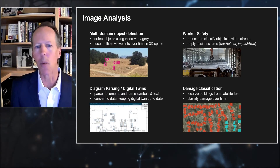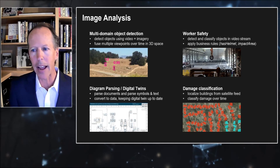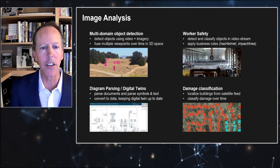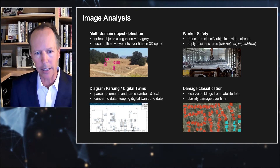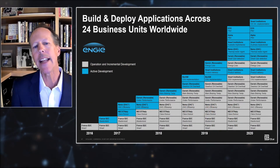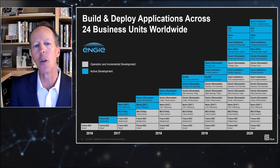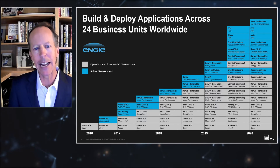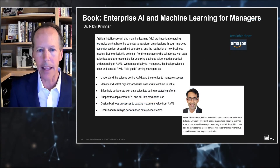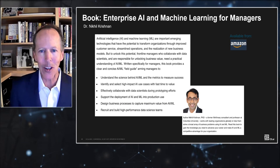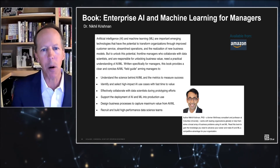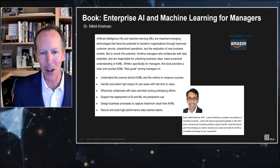There is an exciting new category around image analysis — public safety and object identification around substations, worker safety in dangerous scenarios, diagram parsing to support digital twins, and damage classification using satellite imagery. This is an artifact of a CoE showing the set of applications developed, deployed, and put in production — creating a virtuous cycle of value.